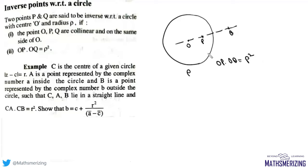So that is the definition of inverse points with respect to a circle. Now, for example, we are given that C is the center of a given circle |z - c| = r. So we have this circle whose center is at C and radius is r.